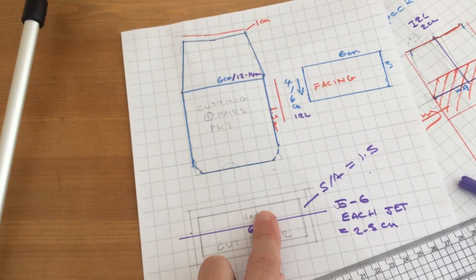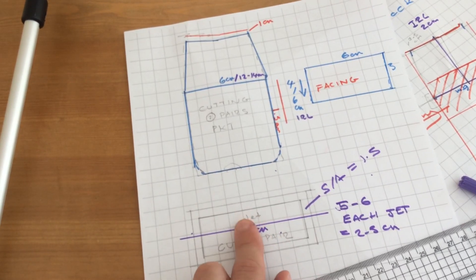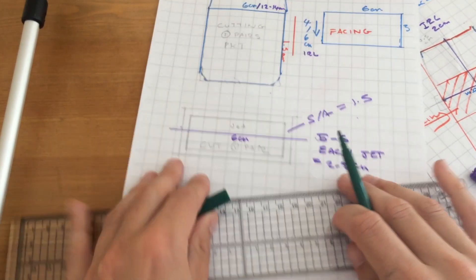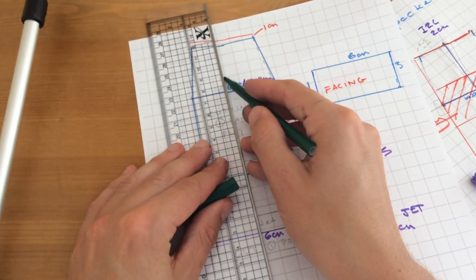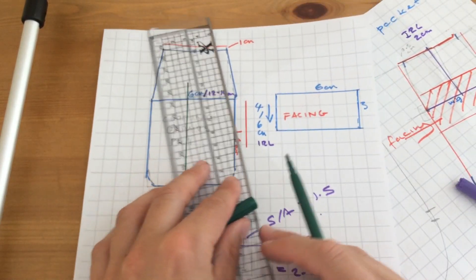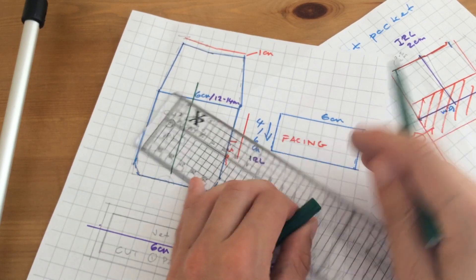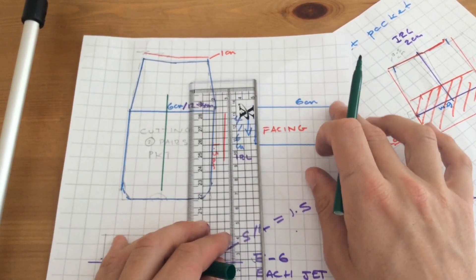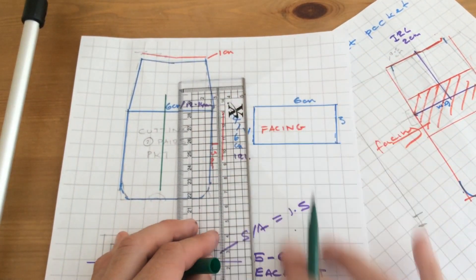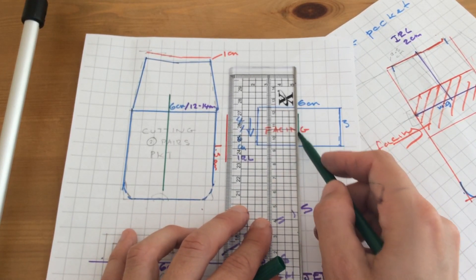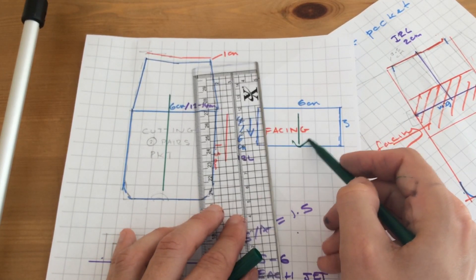This piece is commonly fused, so it has fusing on it. Whereas this pattern piece here will have the grain line going that way. It's quite common for the facing. If you imagine this is pin stripes and the pinstripes are running down, it's quite common that the grain line will match that.